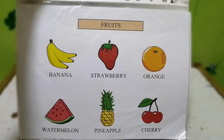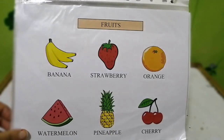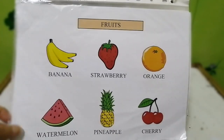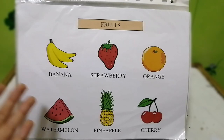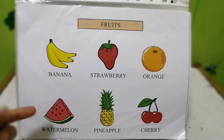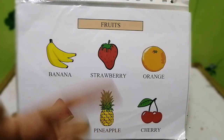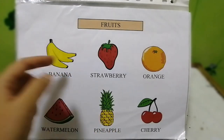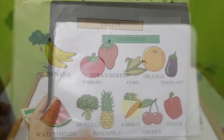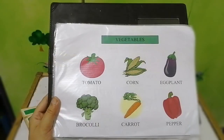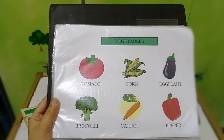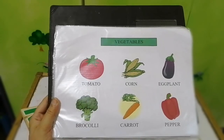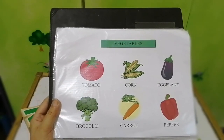On the next page we have fruits, and you can ask your kids which one is your favorite fruit, or you can ask the colors of the given fruits. On this page we have vegetables, and you can repeat the same method as for fruits.